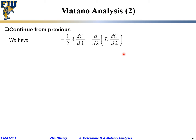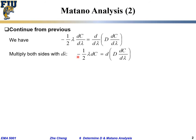Next, we multiply both sides by dλ. The left side becomes minus 1/2 λ dc, because we multiply by dλ. The right side becomes the differential incremental change of D times dc/dλ. We just multiply both sides by the so-called dλ.